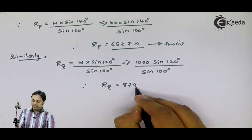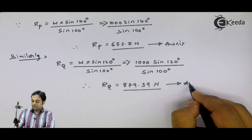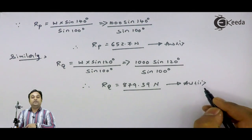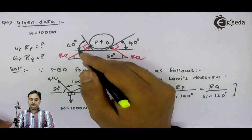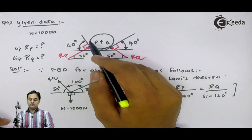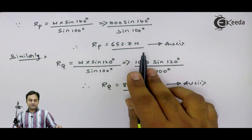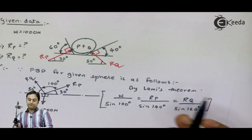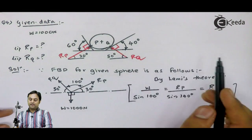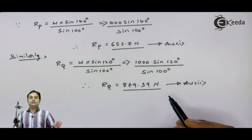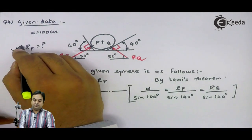In this question, there were two things asked: calculate RP, reaction at P, which is the plane inclined at 60 degrees. That reaction was 652.7 Newton. Next, we were required to calculate reaction at Q, and the value was 879.39 Newton. Both reactions have been solved, and question 4 is completed.